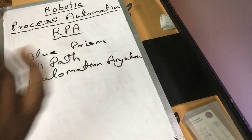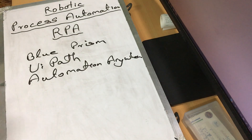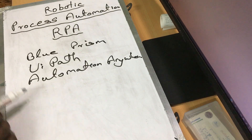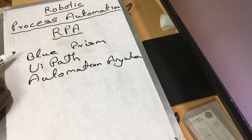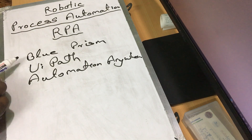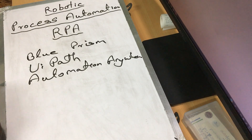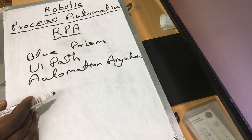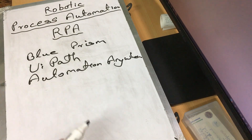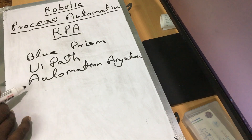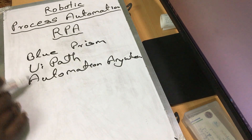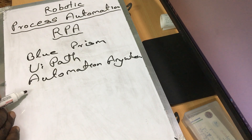If you do this, you will automate it easily. You have these 3 tools: Blue Prism, UiPath, Automation Anywhere. If you use these 3 tools, you can automate it. Some tools are free and some are paid at a different rate.